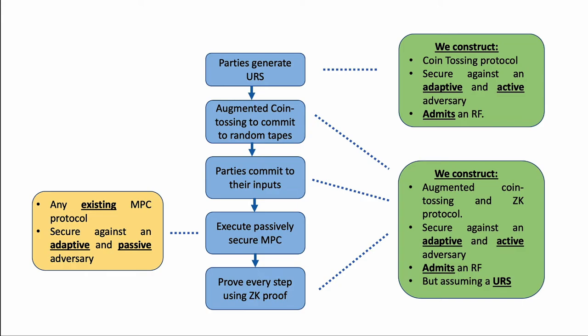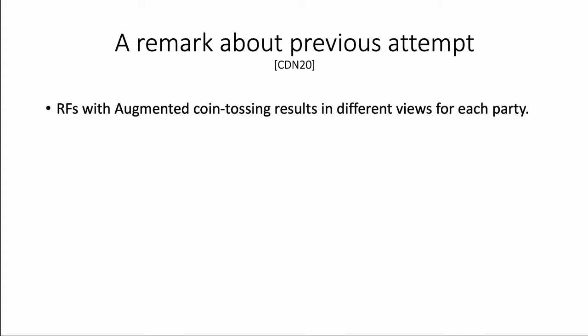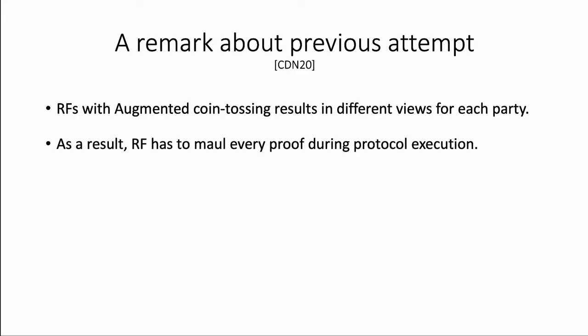I will now talk briefly about our constructions and proof ideas for the augmented coin tossing, zero-knowledge proof, and coin tossing in the plain model. A key issue with extending the previous work of Chakraborty et al. is that in their construction, the RF acts on messages from the augmented coin tossing protocol such that each party has a different view of the commitment to the same coin — the committer sees commitment C, while the rest see C'. During protocol execution, the committer proves a statement with respect to C, while every other party expects a proof with respect to C'. This requires a strong primitive called controlled malleableness, which is not known to be adaptively secure.